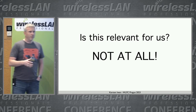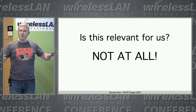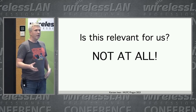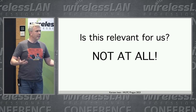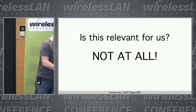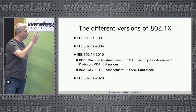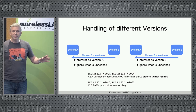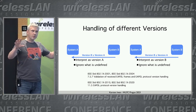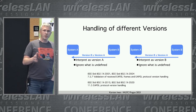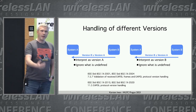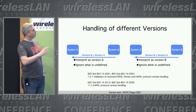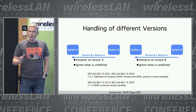First, we don't configure the .1X version — we don't tell our system to use 2001 or 2004 and so on. A vendor implements one version based on the needs for specific functionality. There are four major versions and amendments. The standard defines that if two systems communicating with each other have different versions, it's always interpreted as the lower one, and everything that is not understood is ignored.